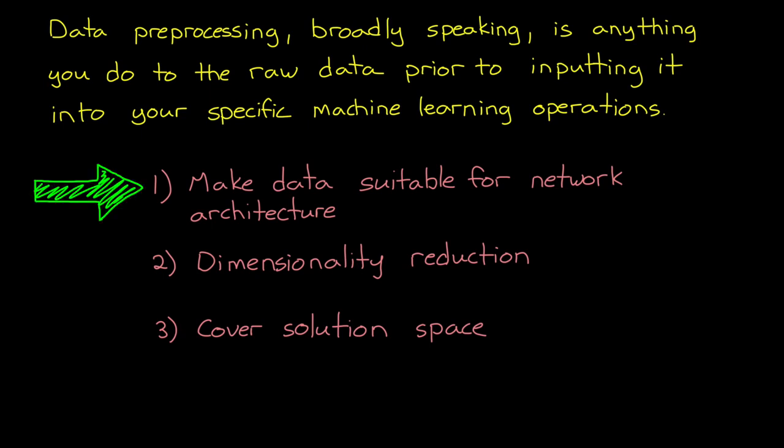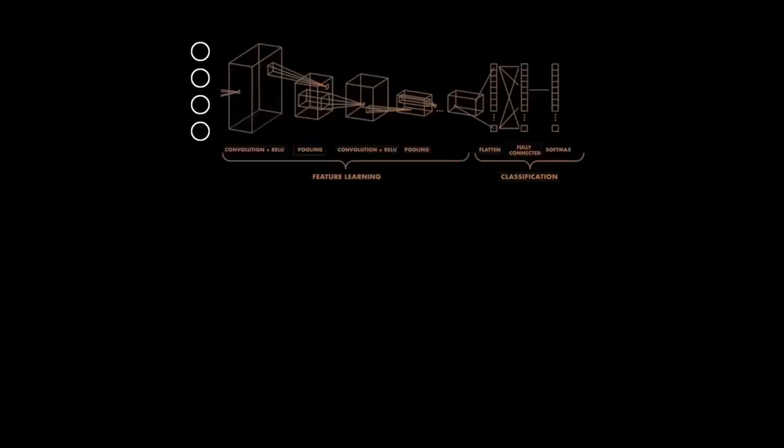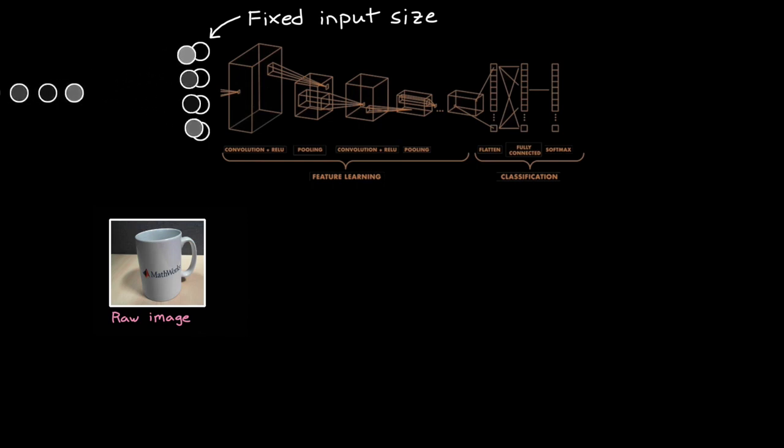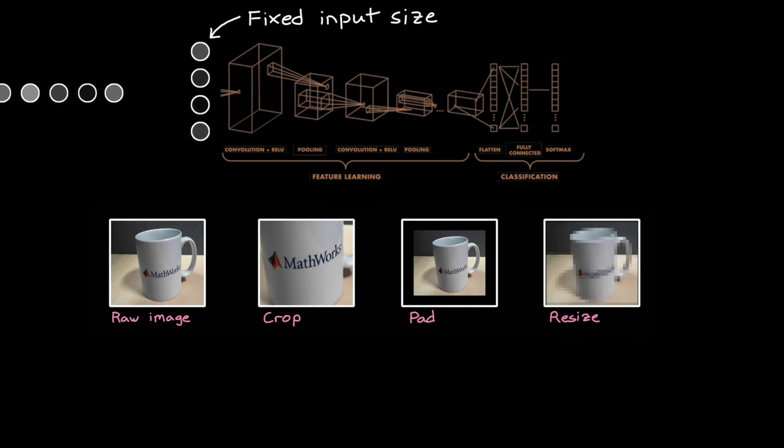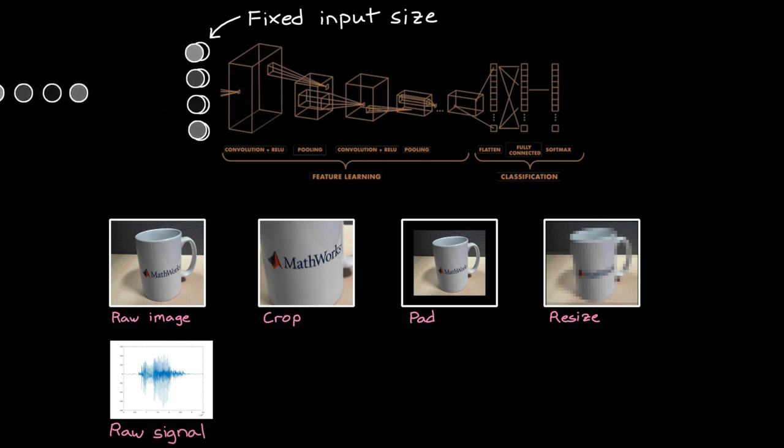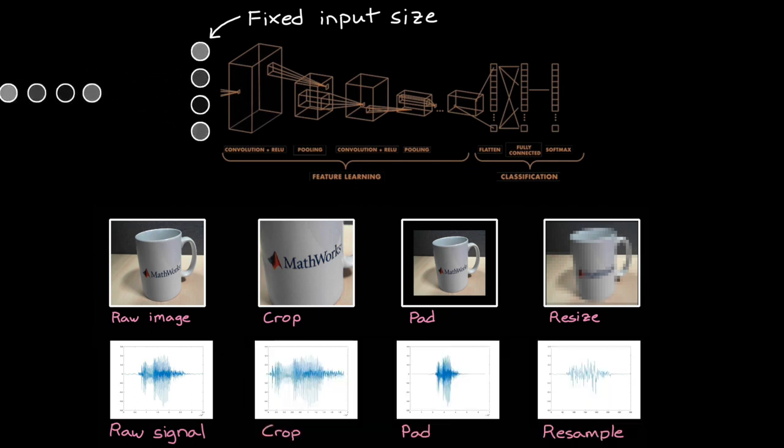So let's walk through an example of each of these so that hopefully they make a little more sense. The input into a network is fixed in terms of the number of elements you feed into it. This means that your data needs to be formed into discrete packets that all have the same number of elements. If you're working with images, each image needs to be the same size, which might mean that part of preprocessing is to crop, pad out, or resize images that don't have the correct dimensions. And it's the same if you're working with signals and not images. The length and sample rate of the signals need to be consistent.